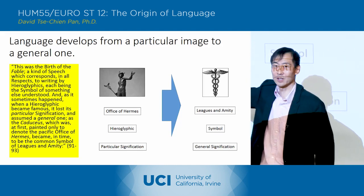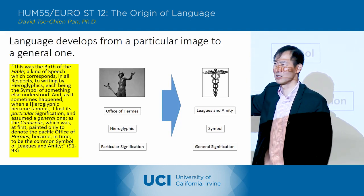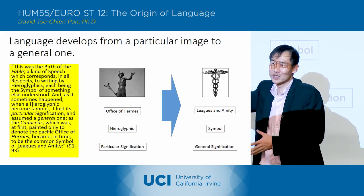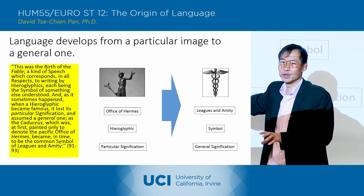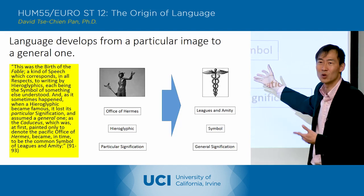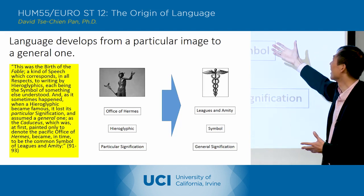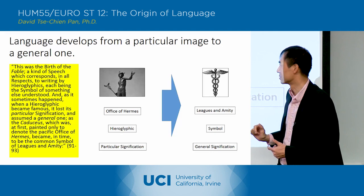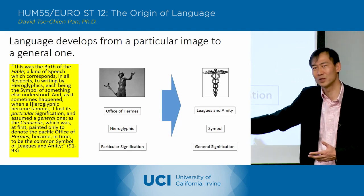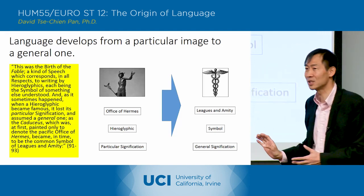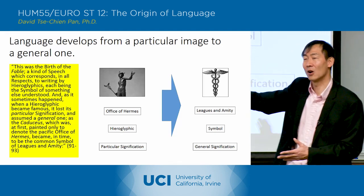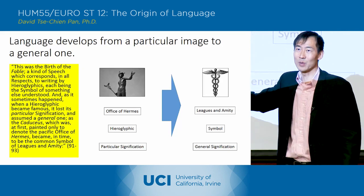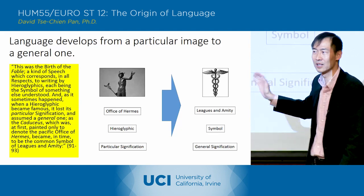In the same way, the hieroglyphic starts as a very specific particular symbol designating one particular thing and then becomes a more general symbol that designates a universal. He's talking about this movement from particular signification to a general signification, and he also says that the fable participates in that kind of movement.